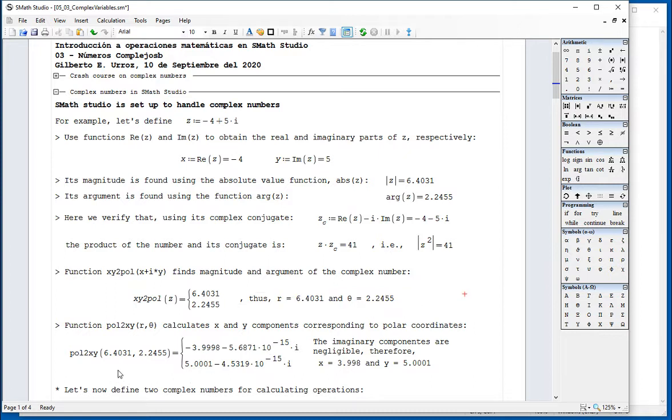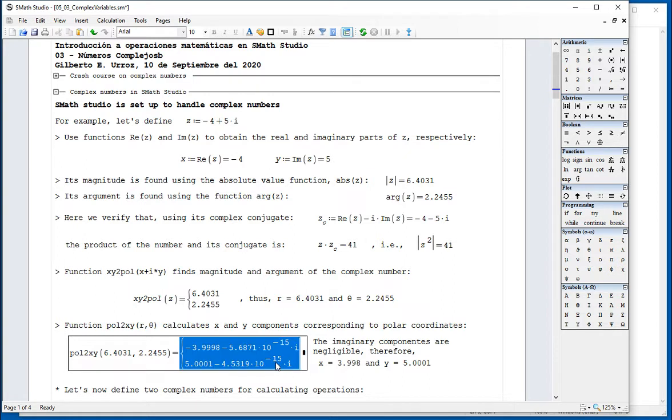If you use the inverse polar to Cartesian, you have to provide those two values. And it uses some sort of a complex calculation that always includes an imaginary component. But it always gives you numbers like 10 to the minus 15, which are basically negligible. These are basically zeros.